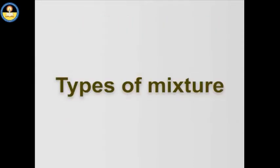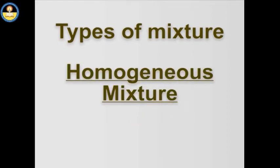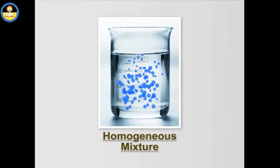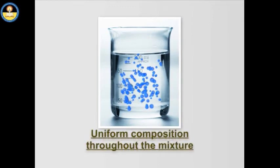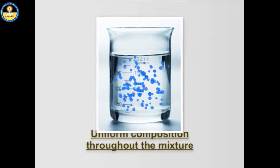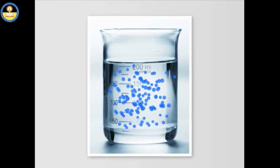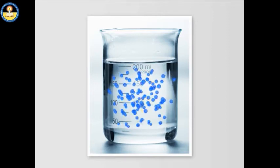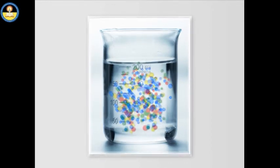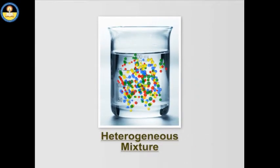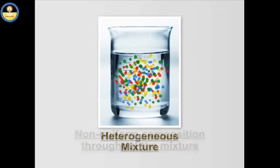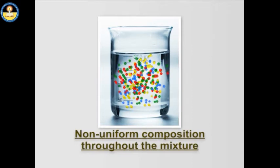Mixtures can be of two types: homogeneous and heterogeneous. A homogeneous mixture is a mixture which has a uniform composition throughout its mass. All parts of a homogeneous mixture have the same properties like colour, taste and smell. A heterogeneous mixture is a type of mixture which contains physically distinct parts and has non-uniform composition.